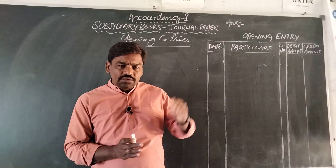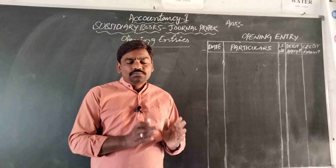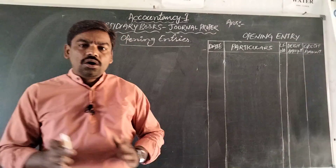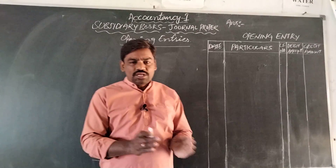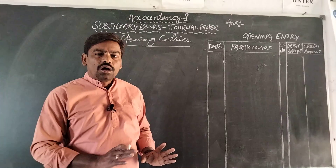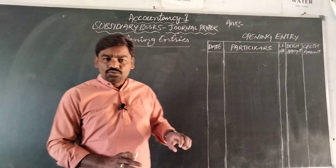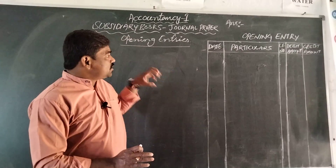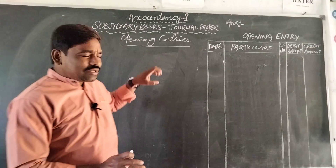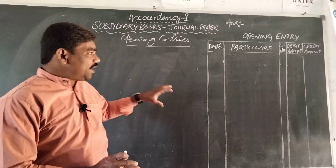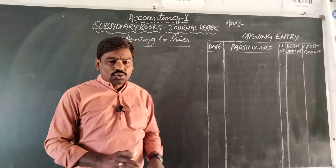The difference between total assets and total liabilities becomes the capital of the organization, and that difference amount is transferred to the capital account. These are the important points to understand in this topic — what is an opening entry and what are the situations when we go to write the opening entries in the journal proper. There are totally three situations.